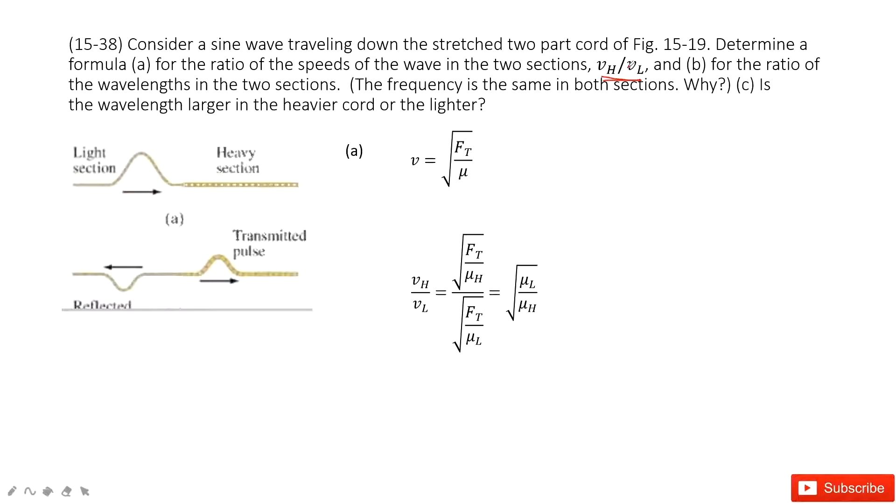So now we can write the speed ratio Vh over Vl. This part equals, you just input the V inside. And then Ft can cancel. So we get the ratio can be simplified as the square root of mu L over mu H.